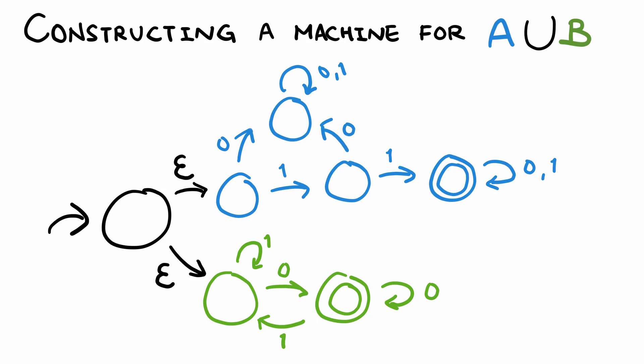By doing this, we create a new non-deterministic finite automaton, or NFA, that accepts the strings in A or in B.